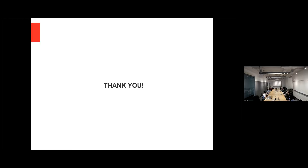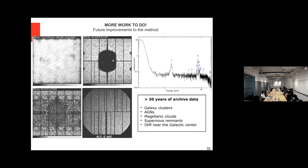Question: Can you do similar things for the velocity structure of galaxy groups or massive elliptical galaxies? Answer: Yes, in principle. The key issue is always how the observations were done — if the source falls inside the copper hole, there is not much to do right now. You need offset observations, and usually you don't have that. So you need to choose something relatively nearby to have sufficient angular size.